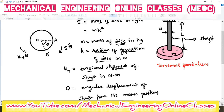Here we are assuming that the disk is rotating in this direction. Because of this rotation, the shaft will be subjected to some twisting. That twisting will be resisted by the shaft, and that resistance will depend on the value of torsional stiffness of the shaft.